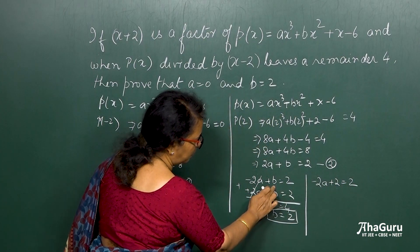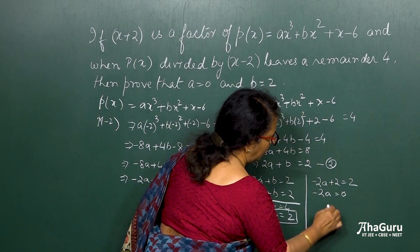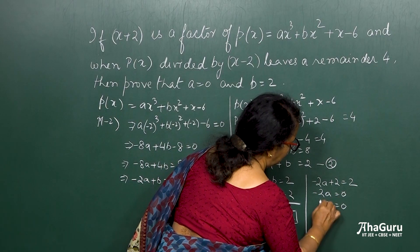What is this 2? It is the same as b, which I got as 2. So if this 2 goes to that side, minus 2a is equal to 0, makes it a is equal to 0. We have proved.